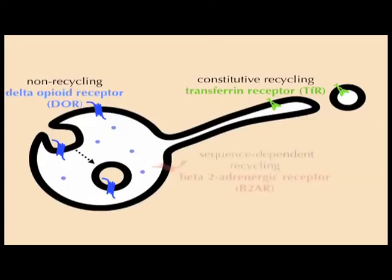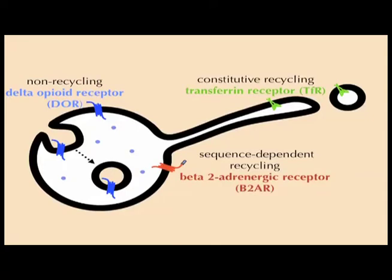What is not known is how other, very similar receptors, such as the beta-2 adrenoreceptor, is recycled. It is not through bulk recycling because it requires a specific sequence on its C-terminus to recycle.